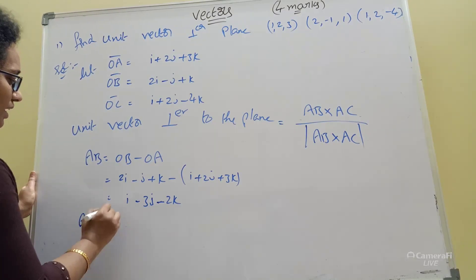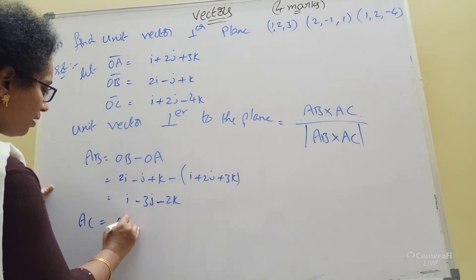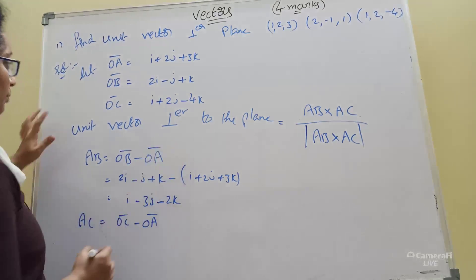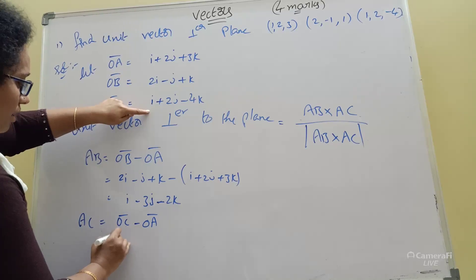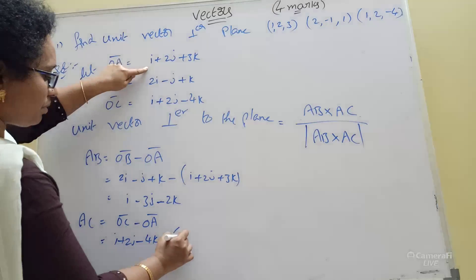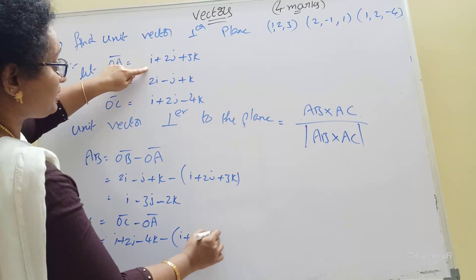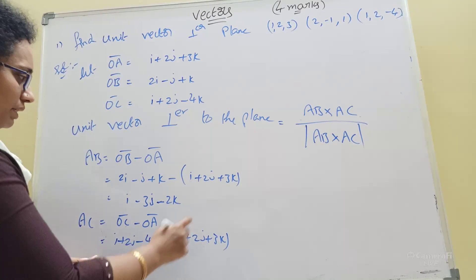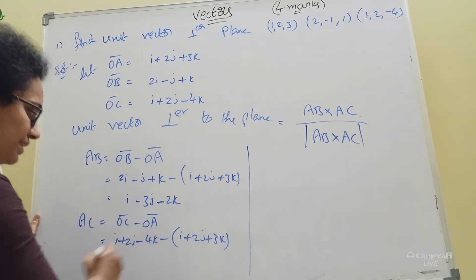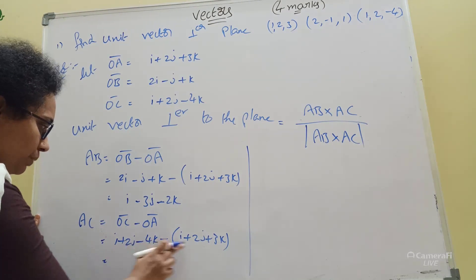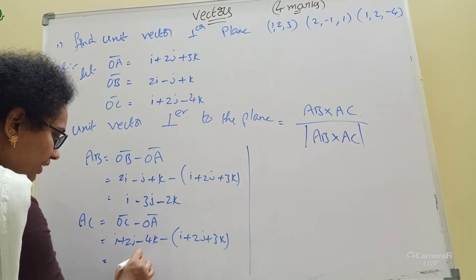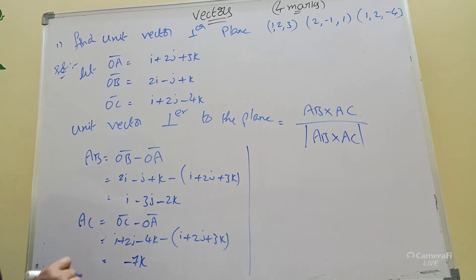Next, AC equals OC minus OA bar. OC bar is i plus 2j minus 4k, minus bracket i plus 2j plus 3k. i minus i cancels. 2j minus 2j cancels. Minus 4k minus 3k gives minus 7k. So AC bar equals minus 7k.